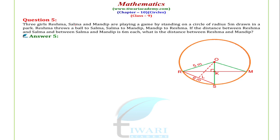So students, we will see in this figure. Reshma, Salma and Mandeep are represented as points R, S and M on this circle, which has centre O. The radius is 5 metres, so OR = OS = OM = 5 metres.